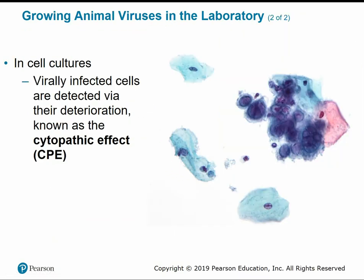Viruses are too small to be seen without a high-powered electron microscope, although some may be identified based on their cytopathic effects in cell cultures. For example, the HPV virus causes physical changes in the appearance of cervical cells visible on an infected pap smear. Virally infected cells are detected via their deterioration, or cytopathic effect.